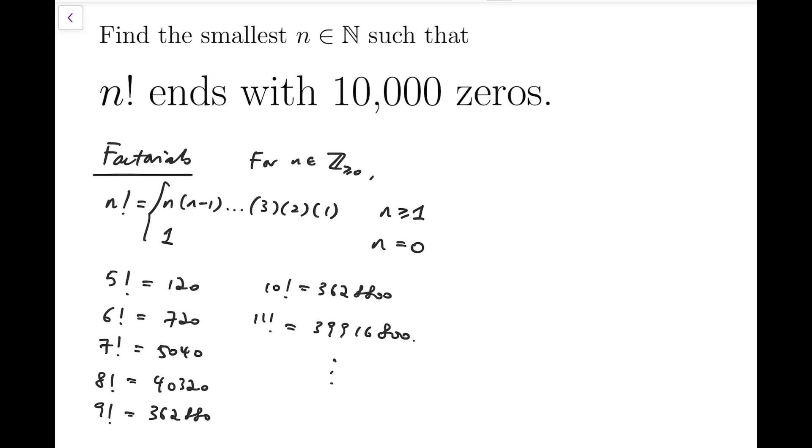So for example, 5 factorial is 120, 6 factorial is 720, and so on. So here I listed a few small factorials up to 11 factorial.